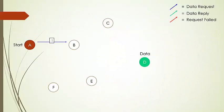Let's consider a simple example. We are defining blue lines as data request, green lines as data reply, and red lines as request failed. I have 6 nodes where A is my starting node and D is the node having the desired data.